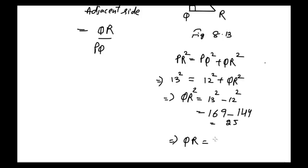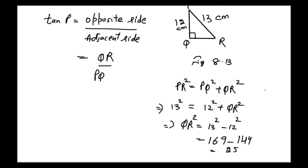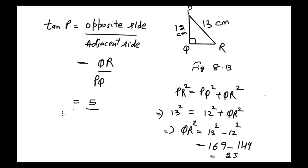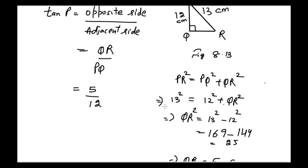The value of QR is equal to 5 centimeters. So we can find the value of tangent of P by putting the value of QR, which is 5, divided by PQ, which is 12. So tan P is 5/12. Now we need to find the value of cot R.